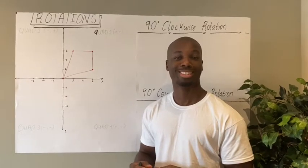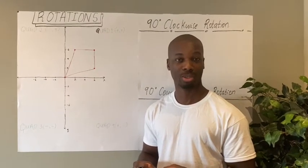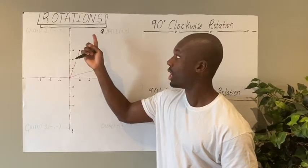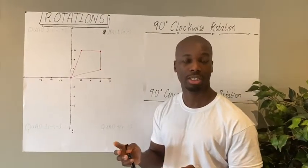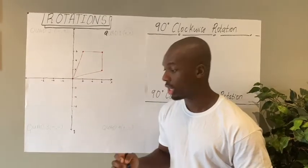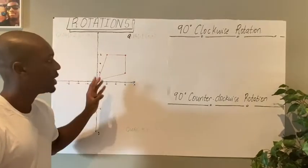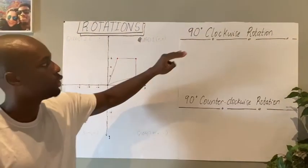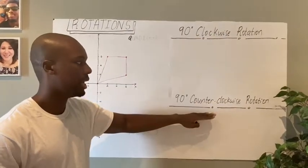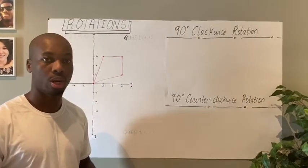Hello guys, welcome to another session. My name is Mr. Anthony Anumel from Piedmont Global Academy and today I'm going to teach you how to rotate an object on the coordinate grid. We're going to limit our rotation to a 90 degree clockwise rotation and a 90 degree counterclockwise rotation.